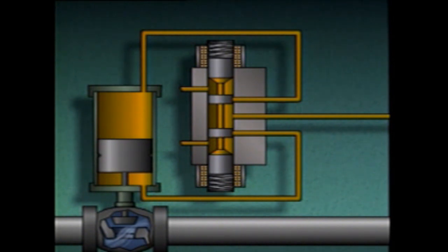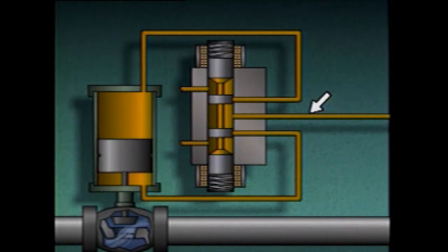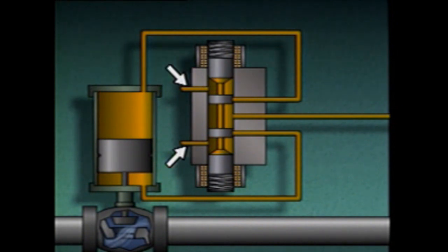A pilot valve consists of a valve body, solenoids, a spool, a spring at each end of the spool, a hydraulic fluid supply port, two hydraulic fluid ports to the actuator, and two hydraulic fluid vent ports.